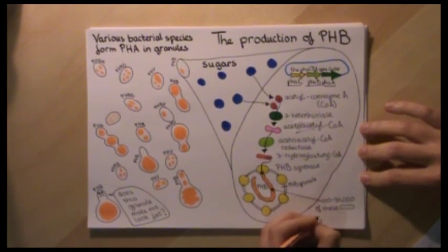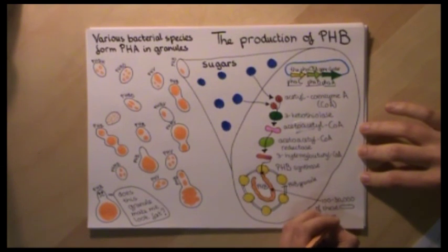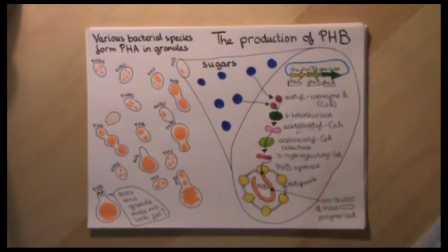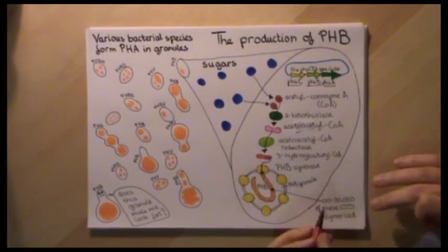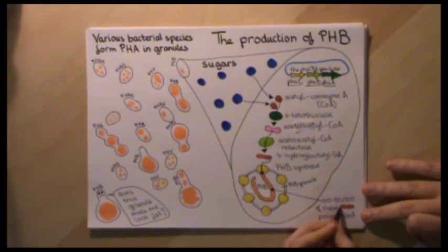And a PHA is typically between 100 and 30,000 polymerized hydroxyalkanoates.